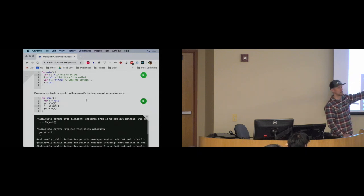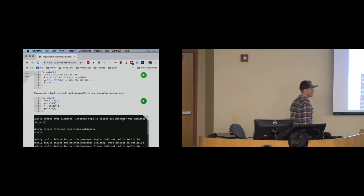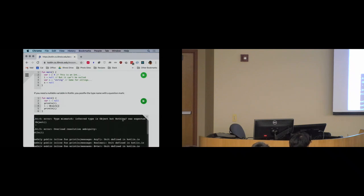Kotlin actually has a special type for this — the type is called `Nothing?` — which is used when you assign something directly to null. Nothing does not store an actual type; it's a special type that indicates the only value this variable can store is null.